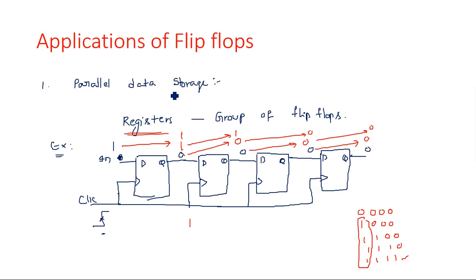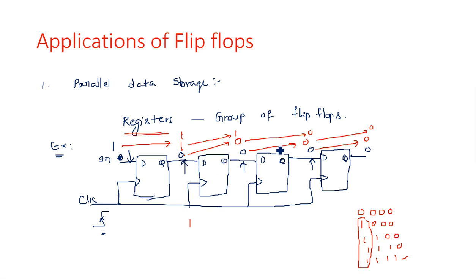The first application is parallel data storage. Instead of giving data individually in a chain, we give data individually at each flip-flop input — here, here, here, and here — so data can be stored in parallel. We can then retrieve the data at the output of every stage. This is parallel data storage.